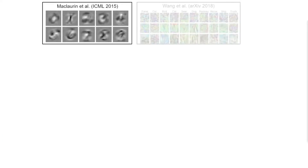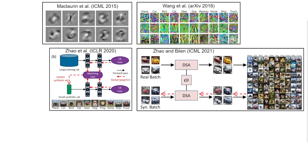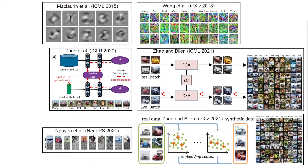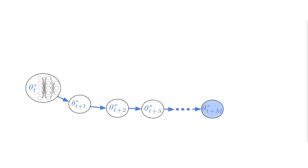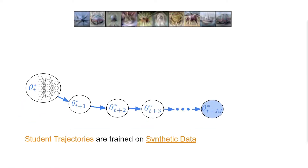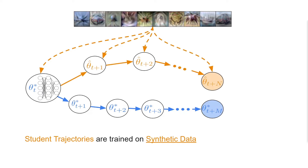Previous works have explored other methods of dataset distillation with varying degrees of success. In our new method, we distill our synthetic data by matching expert training trajectories. These expert trajectories are first trained on real data. We then initialize a student model at a sample time step t along the expert trajectory and train for many iterations on the synthetic data.